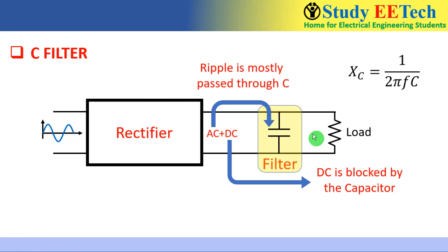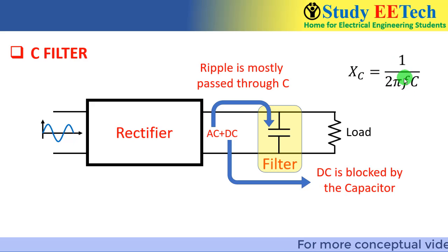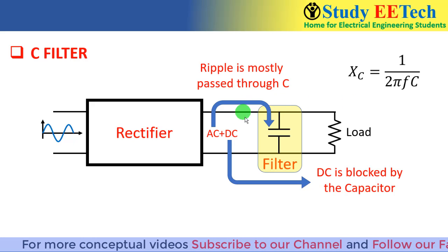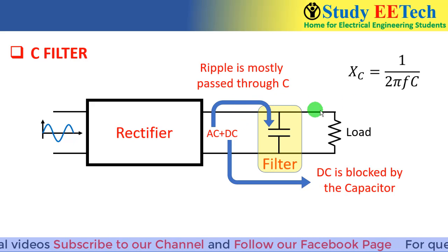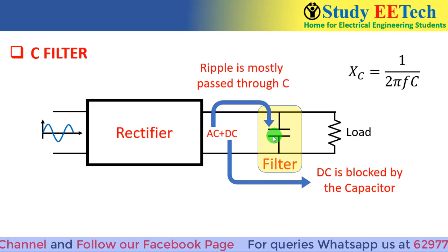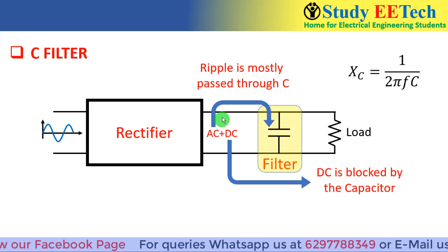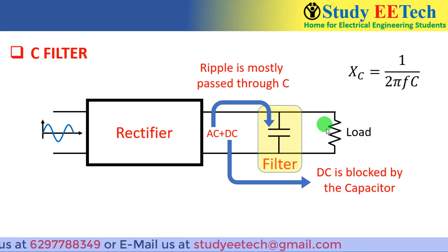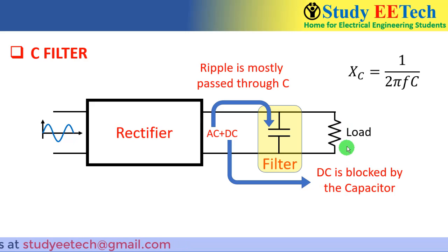Now the C filter. The rectifier gives us AC and DC again. The capacitor is placed in the parallel path because XC = 1/(2πfC) — for DC the capacitor offers infinite resistance. If it were placed in series, it would block the DC and nothing would appear at the load terminal. In parallel, the AC part passes through the capacitor and the DC appears at the load.